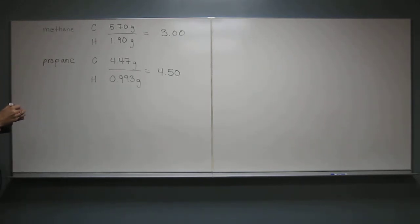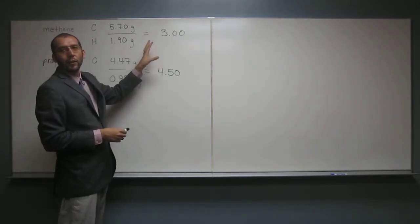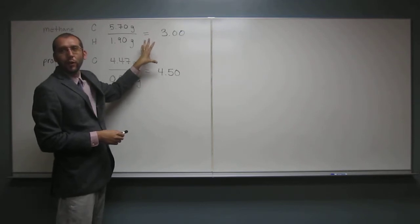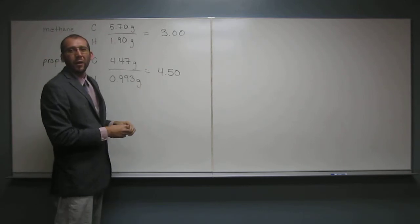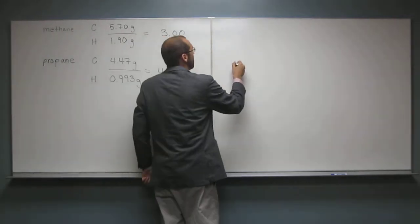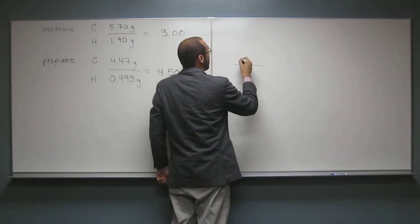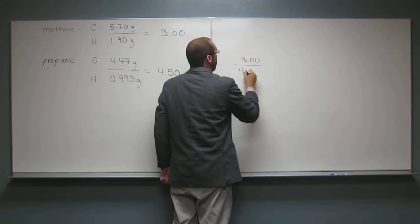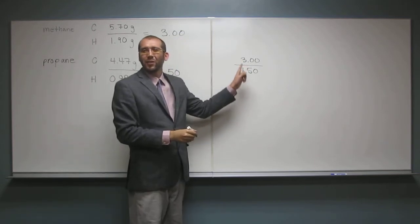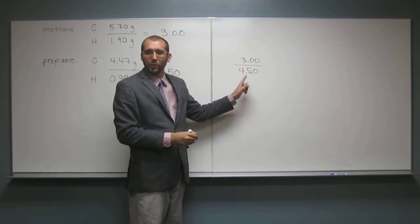So now, well, we can say, I don't know if you can tell, but if you divide these two, you're going to get another ratio of whole numbers. But it might be hard for you to see that, because if we do it like this, 3.00 divided by 4.50, that really doesn't look like two whole numbers, right? Because that one's not a whole number.